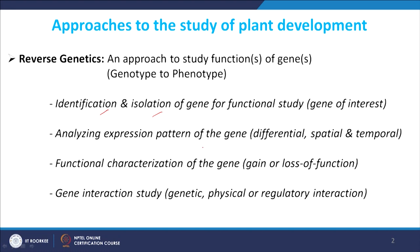Once we identify the gene and know the expression pattern, we can expect some phenotype in the tissue where it is normally expressed. Then we move ahead for functional characterization. Most commonly we take the gain of function approach, trying to express a gene where it is not normally expressed and observe what happens. This tells us if a gene is sufficient for initiating any developmental program.